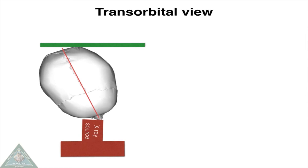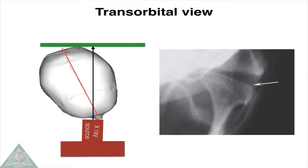Transorbital view: the image receptor is placed behind the patient's head to the side of interest. The patient's head is slightly turned to the side of interest and the X-ray beam is directed through the ipsilateral orbit and TMJ of interest. The resultant radiograph looks like this.